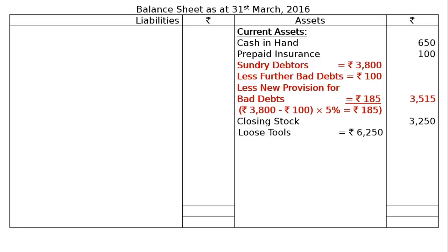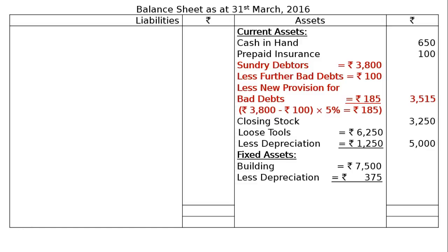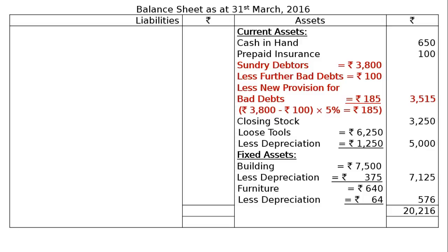Loose tools rupees 6,250 revalued at rupees 5,000, less depreciation rupees 1,250. Fixed assets: building rupees 7,500 less depreciation 5% rupees 375, final column rupees 7,125. Furniture rupees 575 net of depreciation. Total asset side comes to rupees 20,160.